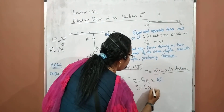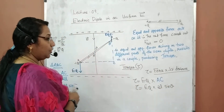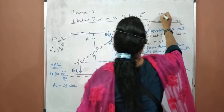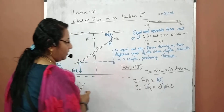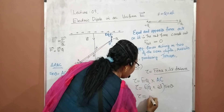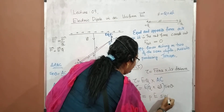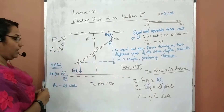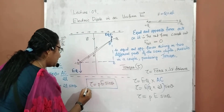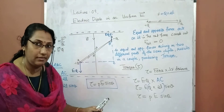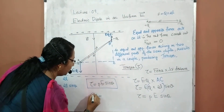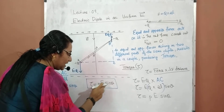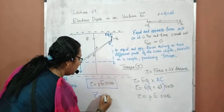Substituting: tau = eQ × 2l sin theta. Now, q × 2l is the dipole moment p, since p = charge × distance. Therefore, tau = pE sin theta. This is a very important result. The torque acting on an electric dipole placed in a uniform electric field is tau = pE sin theta.